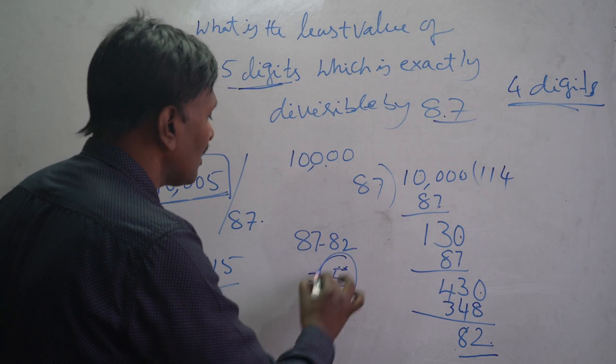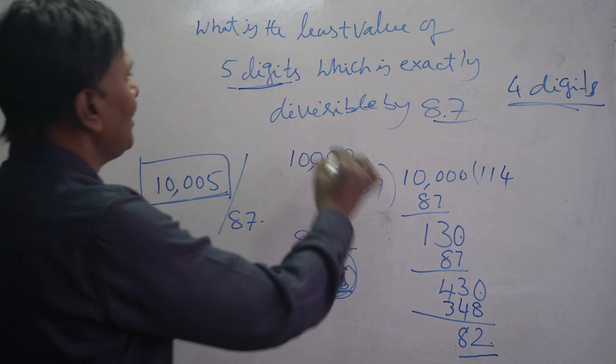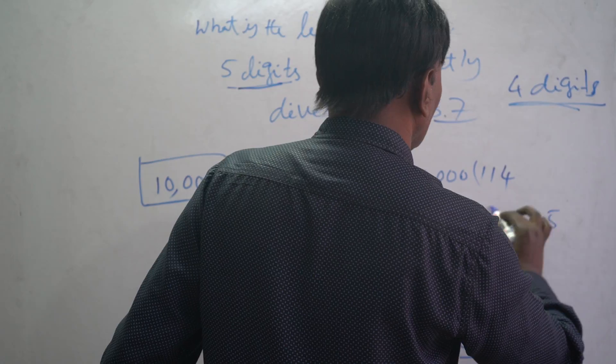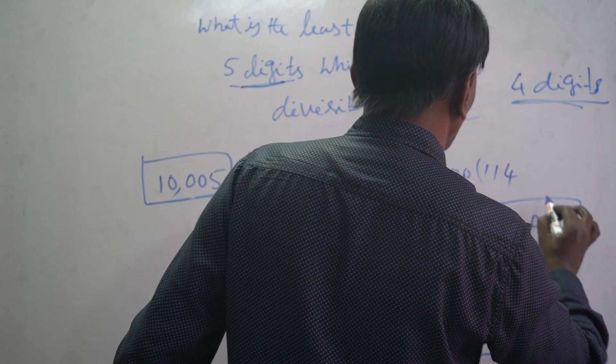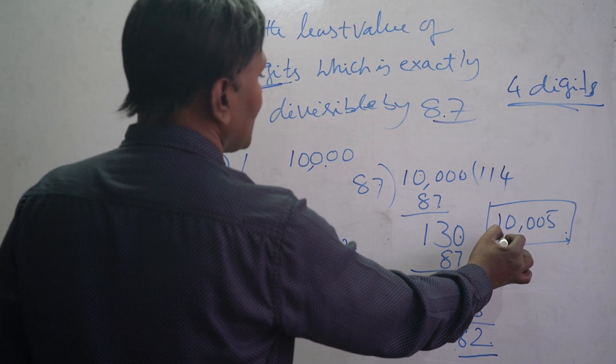5 is the answer. What is the output? 10,005 is the answer. We have to add 5 to get a 5-digit number.